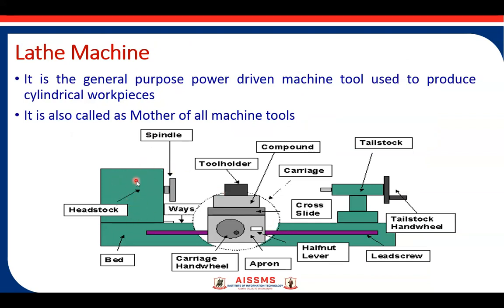The left-hand side of the lathe machine is called the live center, whereas the right-hand side is called the dead center. The chuck side is called the live center because material removal from the raw workpiece is carried out there. The tailstock or dead center is used only for holding purposes — for holding long shafts between the two points, or for mounting a boring bar or drilling tool.